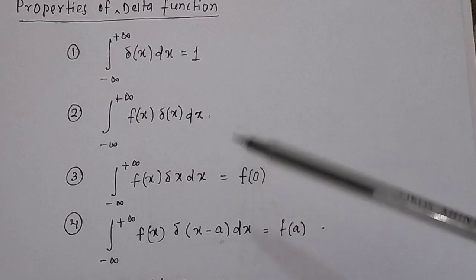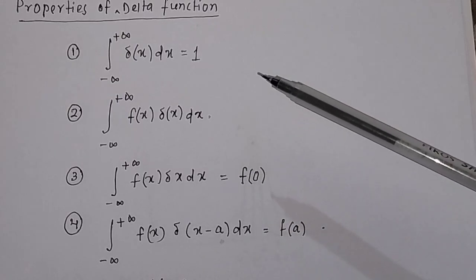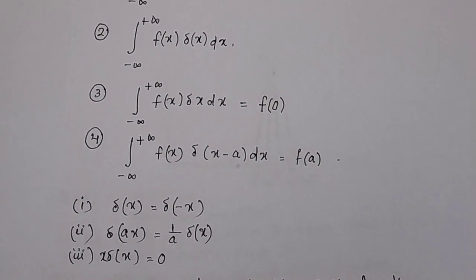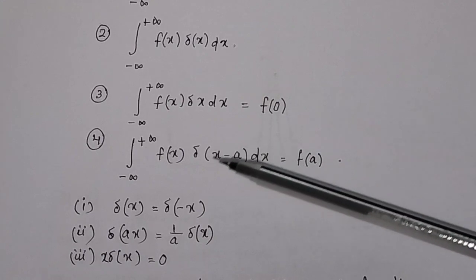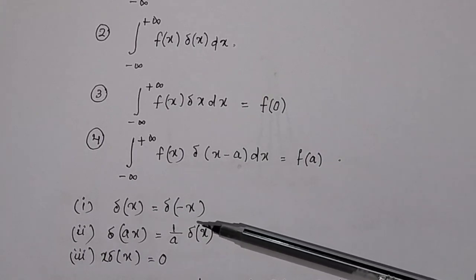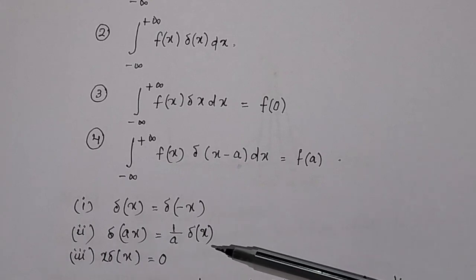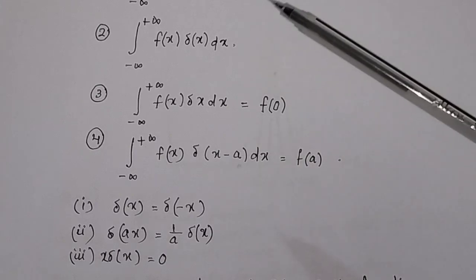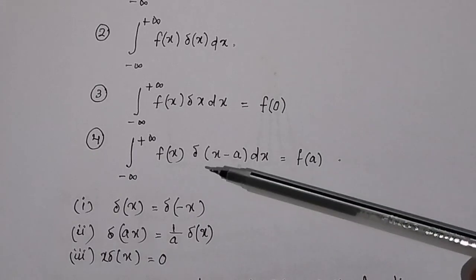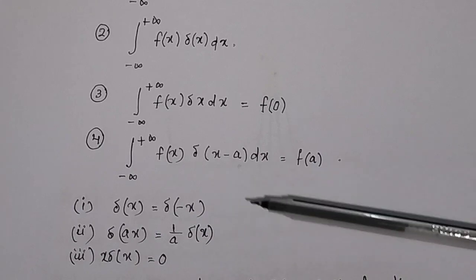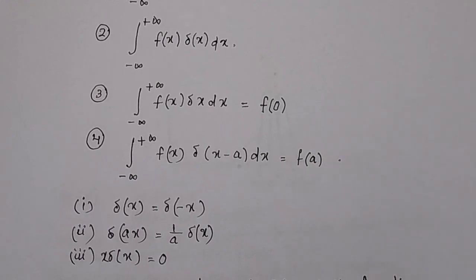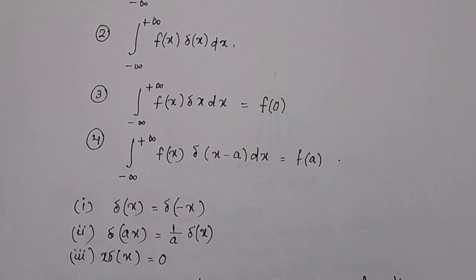These four properties are useful for solving various problems involving the Dirac delta function. There are also standard formulas derived from them: δ(x) = δ(−x), δ(ax) = (1/|a|)δ(x), and x·δ(x) = 0. These can be proved from the four properties, and are explained individually in separate videos in the Dirac delta function playlist on this YouTube channel.